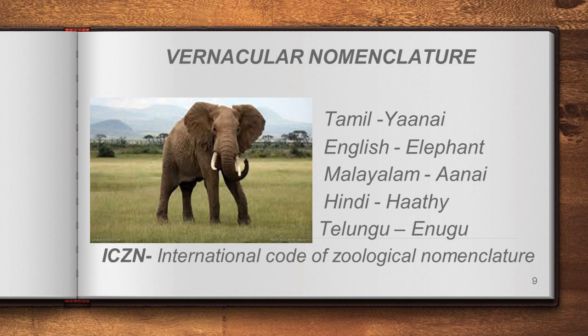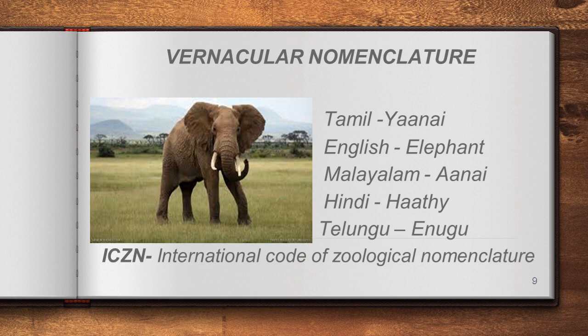Vernacular nomenclature means naming organisms using regional or local language. For example, the elephant is called 'Yaanai' in Tamil, 'Elephant' in English, 'Aanai' in Malayalam, 'Hathi' in Hindi, and 'Enugu' in Telugu. The animal is the same, but we are calling the same organism with different names.